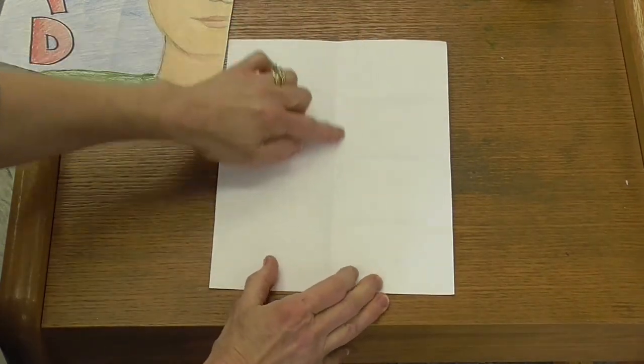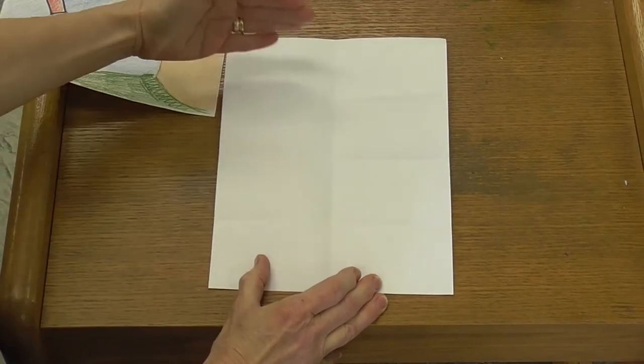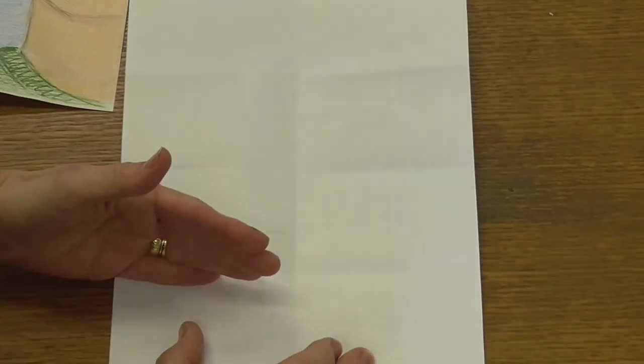And then I'm going to fold it in half this way. When I'm done, I have a fold that goes up and down, and I'll have three folds this way so that I break it into eight sections.